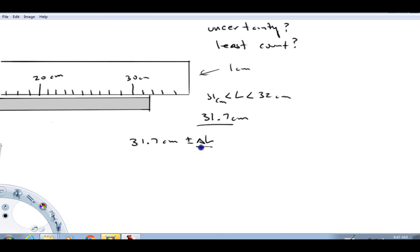Now, as far as, well, how large could the delta L be? Well, a good place to start for the uncertainty in a measurement is half the least count. So in this example, we may say, well, the uncertainty here we believe is 0.5 centimeters. And what we'd be saying is this measurement is somewhere between 31.2 and I guess 32.2 centimeters.